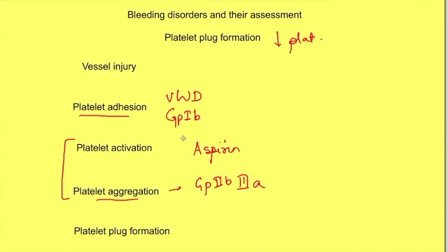Similarly, other drug overdoses like ADP receptor antagonists and GP2B3A receptor antagonists will lead to decreased platelet plug formation.